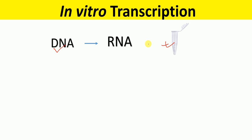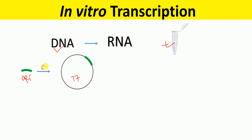In the in vitro transcription process, the sequence of interest is first cloned into a backbone plasmid, such as the T7 mRNA backbone plasmid. This cloning of the ORF into the backbone plasmid is the first step in the in vitro transcription process.